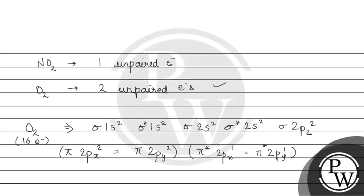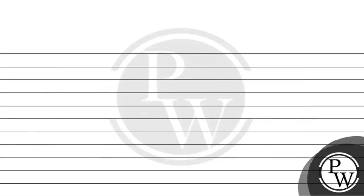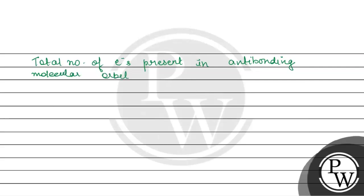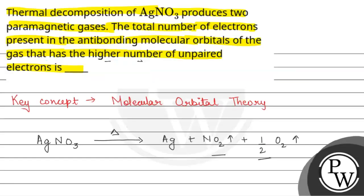हमें बताना है number of electrons present in the anti-bonding molecular orbitals। ये हो जाते हैं: sigma* 1s2, sigma* 2s2, pi* 2px1, pi* 2py1 — यानी 2 plus 2 plus 1 plus 1, which is equal to 6. Total number of electrons present in anti-bonding molecular orbitals = 6।